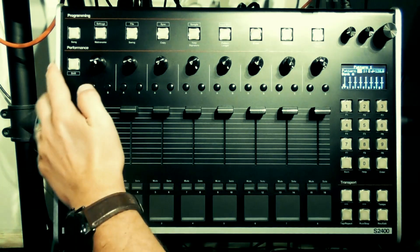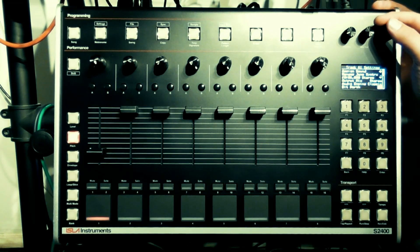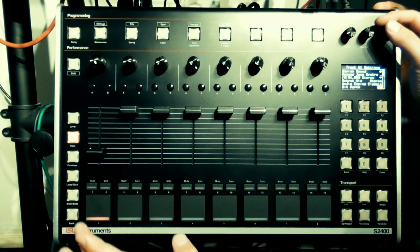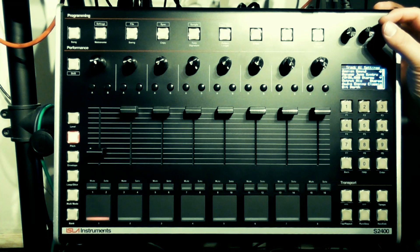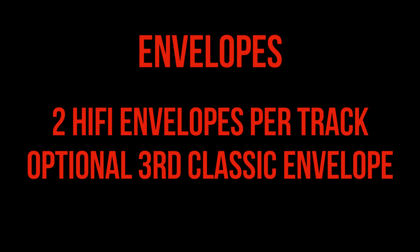You can also manually adjust the bit depth right down to one bit to crunch up the sound even further. Next let's move on to envelope. By default there are two hi-fi envelopes per track, although there is an optional third classic envelope that we'll talk about in a moment.